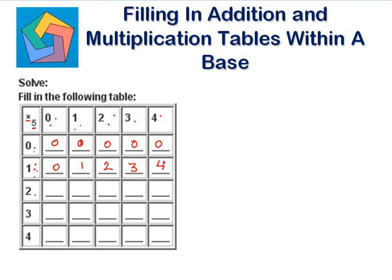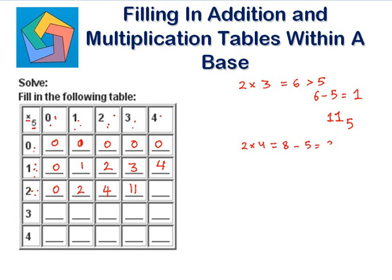Now, 2 times 0 is 0. 2 times 1 is 2. 2 times 2 is 4. 2 times 3 is 6, and 6 is greater than 5. How do we write 6 in base 5? 6 minus 5 is 1, so we write 1 here and 1 as the carryover — that's 11 to the base 5. 2 times 4 is 8. 8 minus 5 is 3, so 3 goes here and 1 as the carryover — that's 13 to the base 5.